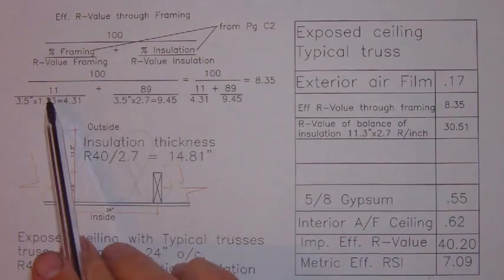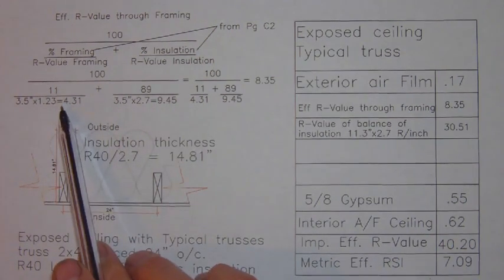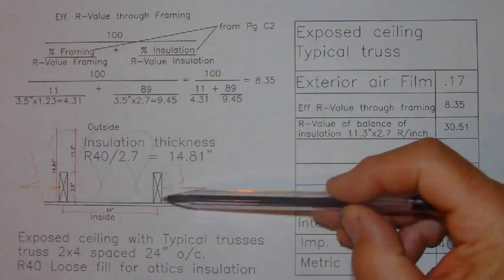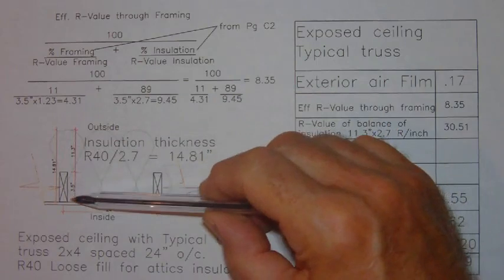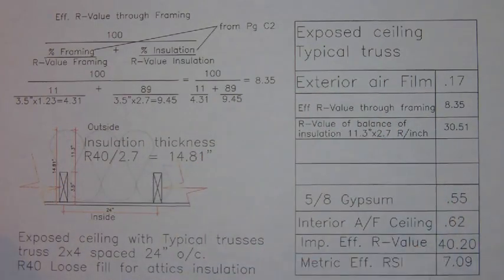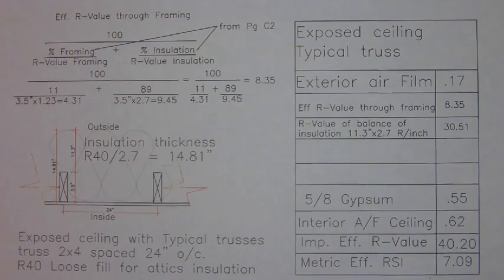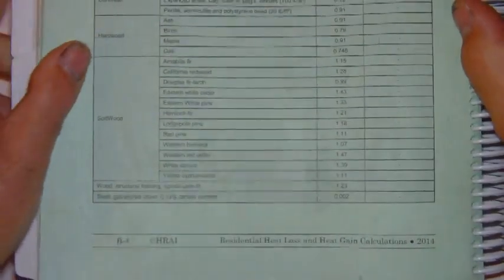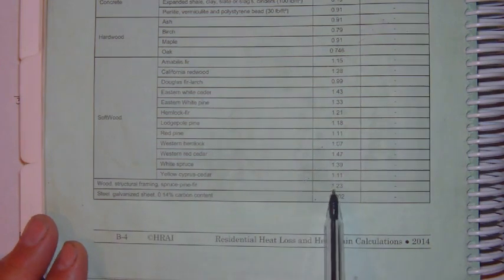Take those values and substitute those into your equation here. Then the next step is we need to establish the R-value of our wood framing. So since the wood is 3.5 inches deep, and the R-value for our wood, if you look on page B4 of the HRAI manual, you will find that down near the bottom you've got structural framing listed at 1.23 R-value per inch.